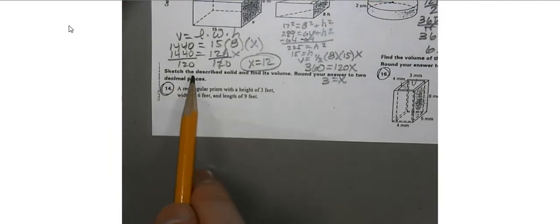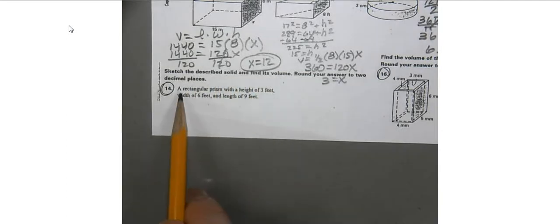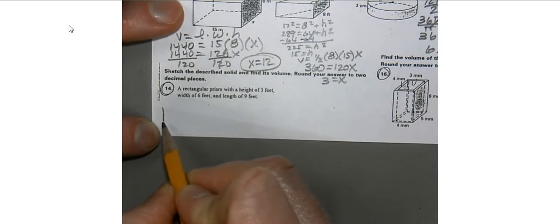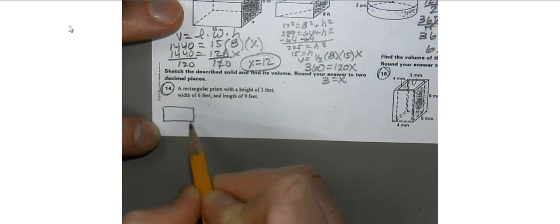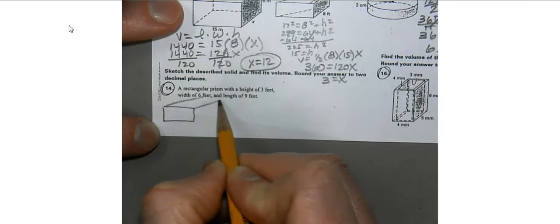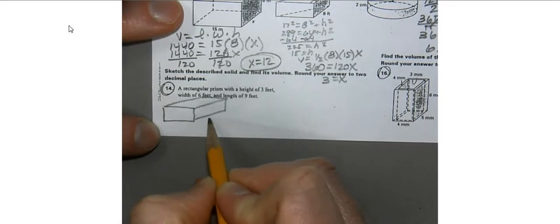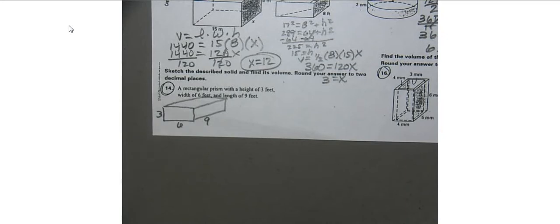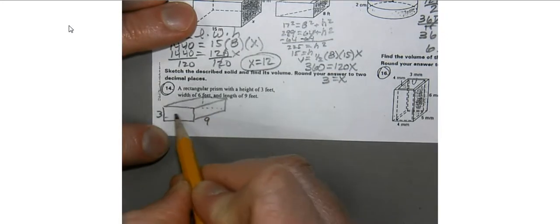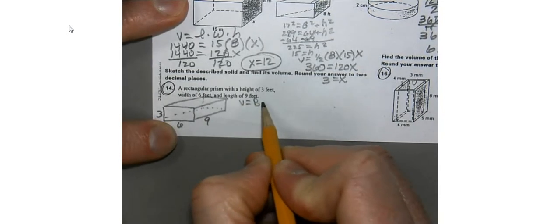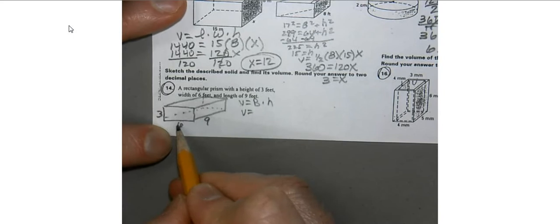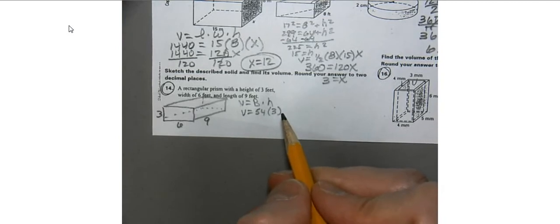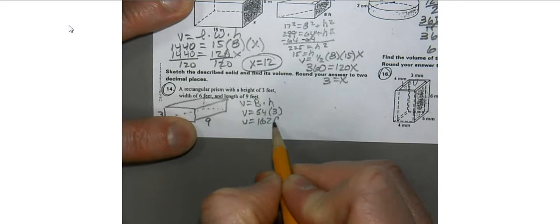We're going to sketch and describe the solid and find its volume. We have a rectangular prism with a height of 3, a width of 6, and a length of 9. The volume is the area of the base times the height, so the base is 9 times 6, which is 54, times 3. 54 times 3 comes out to 162 feet cubed.